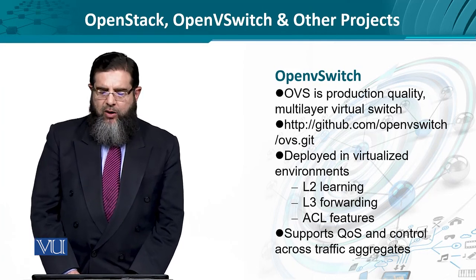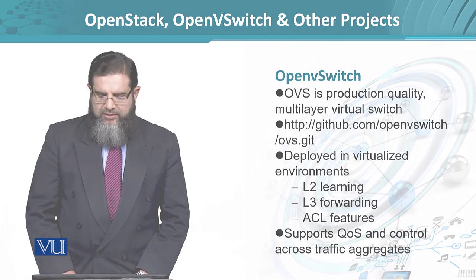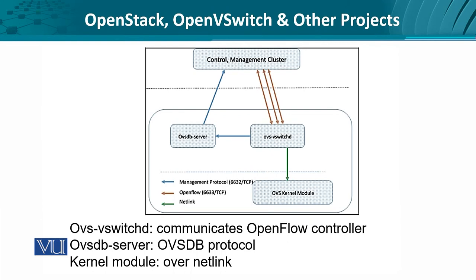The Open vSwitch project also supports quality of service and handling traffic aggregates. This is a bird's-eye view of how Open vSwitch communicates with the SDN controller or management entity and how it is implemented in the forwarding element kernel. The Open vSwitch daemon communicates using the OpenFlow protocol with the controller, communicates with the database server using the Open vSwitch database protocol, and then implements the policies on the forwarding element or kernel module. Different interfaces are provided for the OVS daemon to communicate with respective entities.